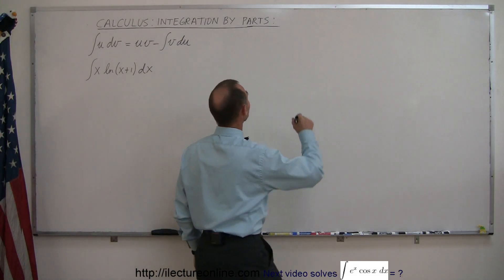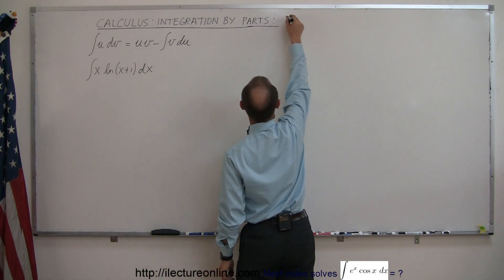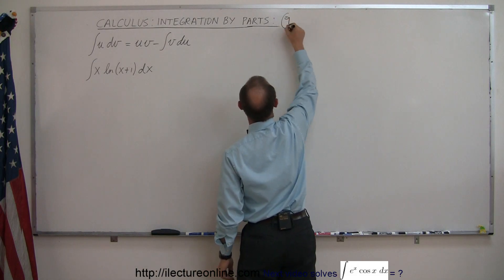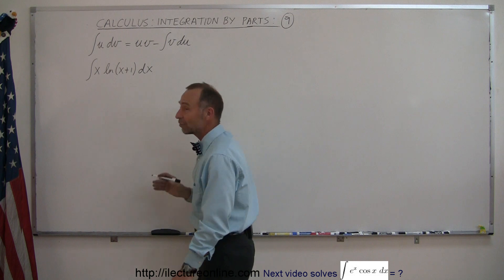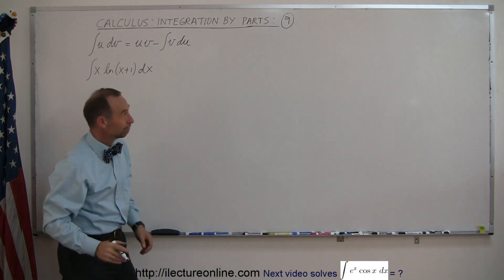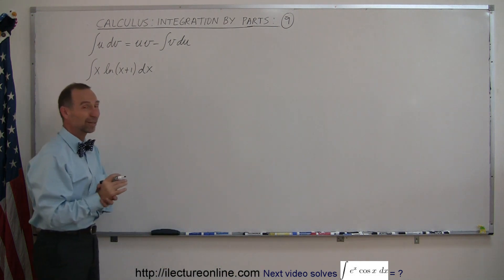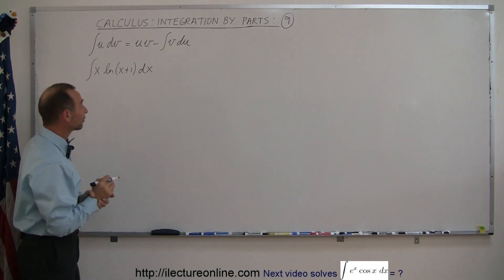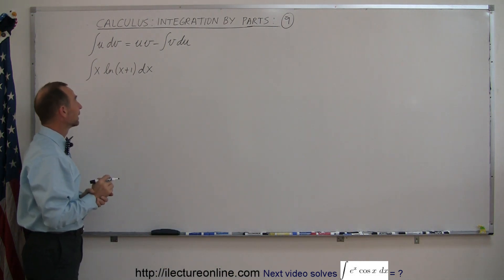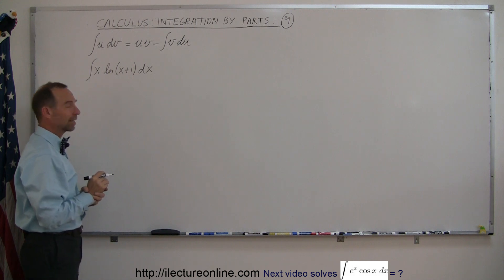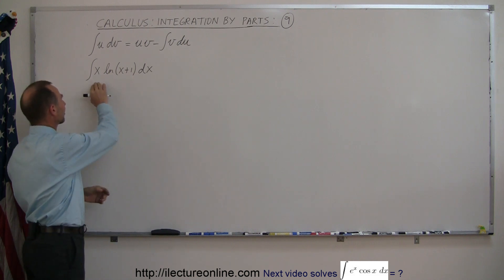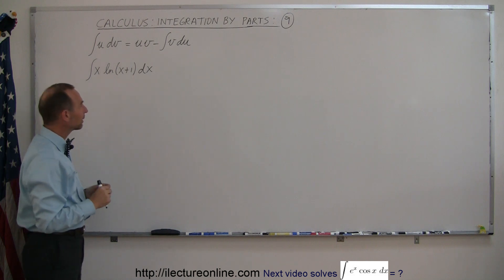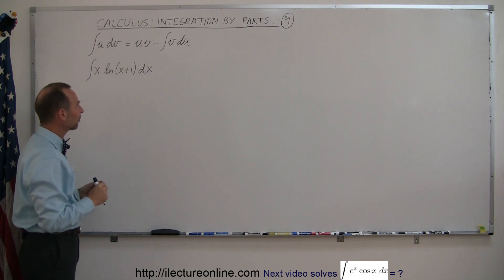Here's example number nine in our series on how to use integration by parts to integrate integrals that would otherwise be fairly difficult. We have an x times the natural log of x plus 1, and that will typically cause problems.